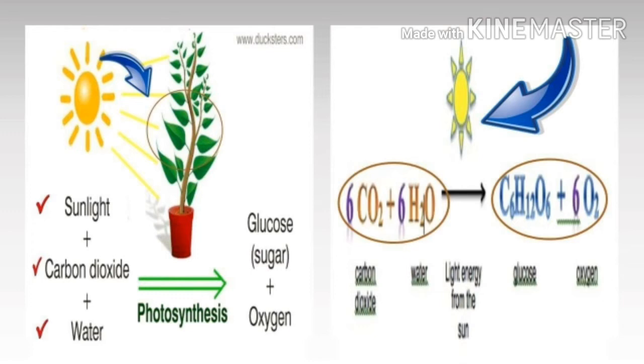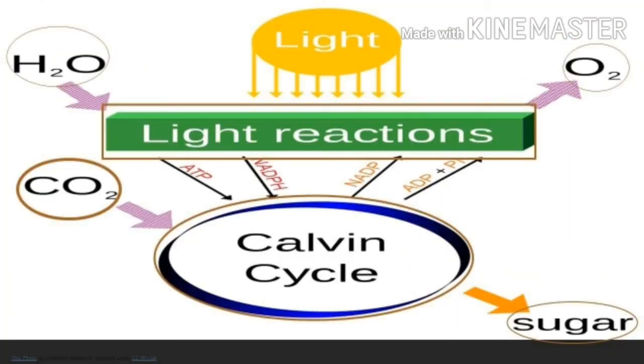There are two stages of photosynthesis: the light-dependent reaction and the Calvin cycle. The light-dependent reaction happens in the presence of light. It occurs in the thylakoid membrane and converts light energy to chemical energy.